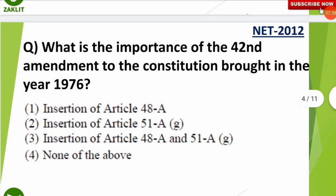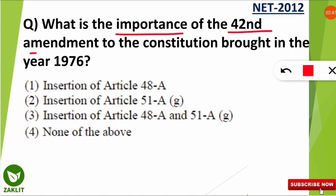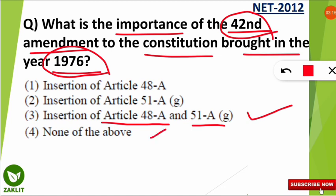The next question came in the NET 2012 examination: what is the importance of the 42nd Amendment to the Constitution brought in the year 1976? The correct option is option number 3 — the inclusion of Article 48A and Article 51A — which brought environmental importance into our constitution through the 42nd Amendment of 1976. Questions are often asked from these two articles.